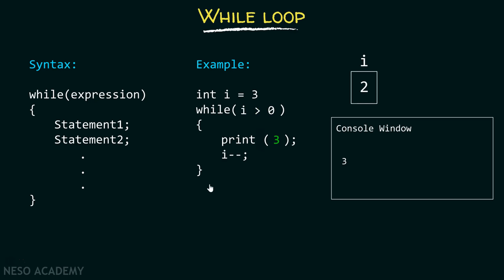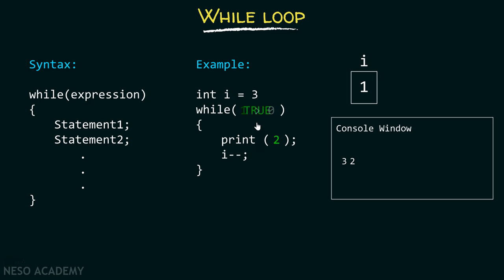After decrementing the value of i, we again check the condition: is i greater than 0? Now i is 2, and 2 is greater than 0, so the condition is true. We go inside and print the value 2 on the console window. After printing 2, we decrement again, making i equal to 1. We check the condition again — is 1 greater than 0? Yes, it is true. Therefore, we print the value 1 on the console window, then decrement i again, making i equal to 0.